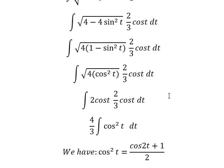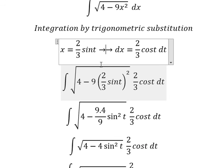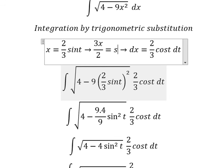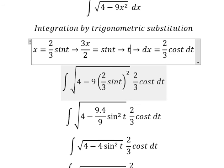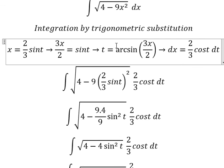For t, we need to return back to this one. So we divide both sides by 2 over 3, and we get t equals arcsine of this one. So we put this one to replace for t.